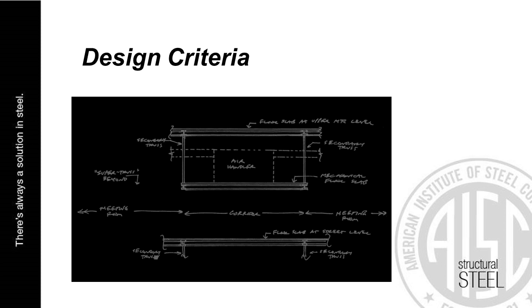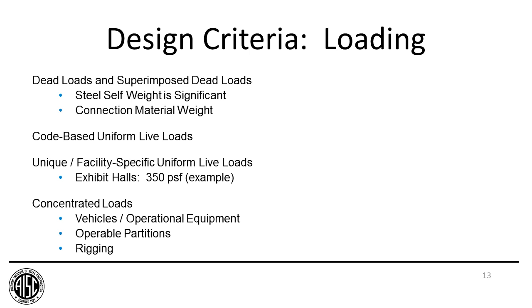Let's start with the design criteria and what is unique to long-span structures compared to a more conventional beam and girder floor system. We can start with strength design considerations — our design loads. On the dead load side you would have your structural weight and also the superimposed dead loads: ceilings, lights, mechanical equipment, floor finishes, partitions, etc.